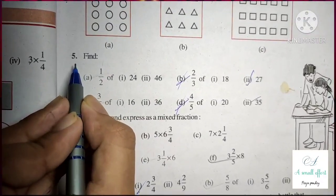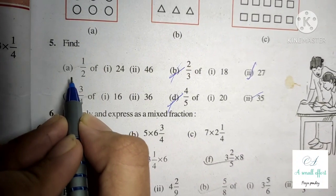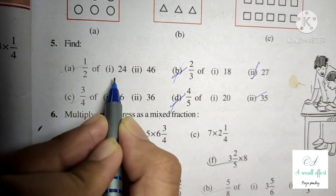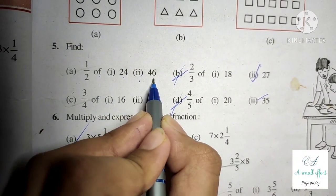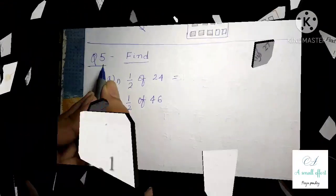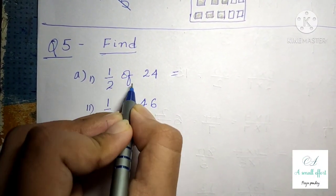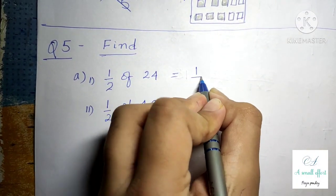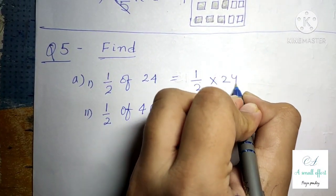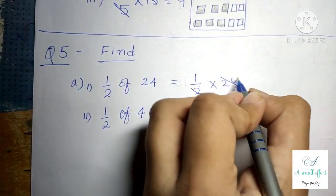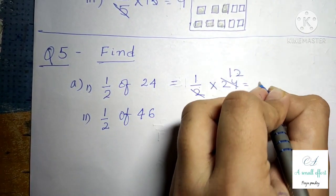Exercise 2.2 question number 5. Bit A, first part is 1 by 2 of 24. We can write this as 1 by 2 into 24. In the 2 times table, 24 comes 12 times, so 1 into 12 is 12.